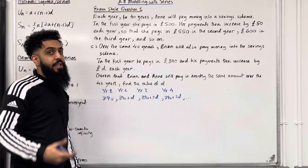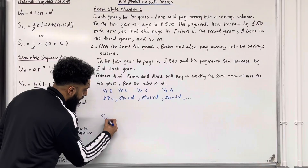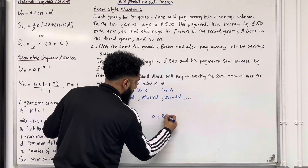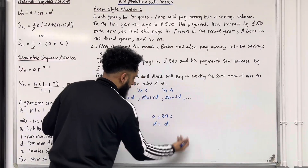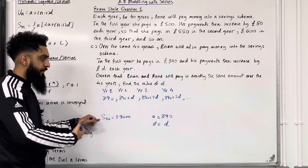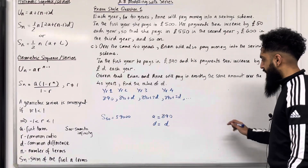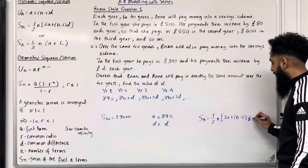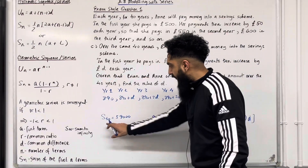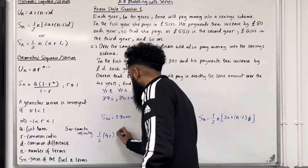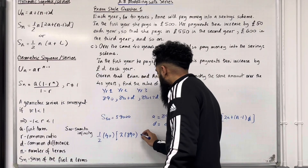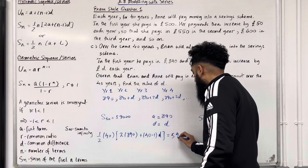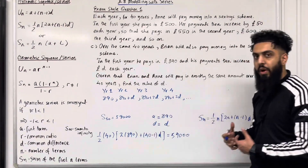Since Brian and Anne pay in exactly the same amount over 40 years, S₄₀ for Anne is £59,000, so S₄₀ for Brian is also £59,000. For Brian's sequence, A = £890 and the common difference is D. We calculate an expression for S₄₀ using the Sₙ formula: Sₙ = ½N[2A + (N − 1)D]. So S₄₀ = ½ × 40 × [2(890) + (40 − 1)D], and this must equal 59,000.